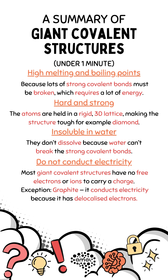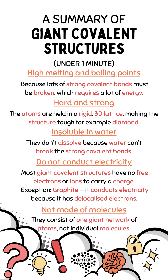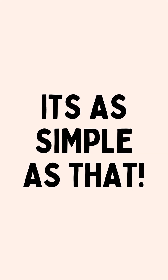Most giant covalent structures do not conduct electricity because they have no free electrons or ions to carry a charge. Exception: graphite — it conducts electricity because it has delocalised electrons. Giant covalent structures are not made of molecules; they consist of one giant network of atoms, not individual molecules.